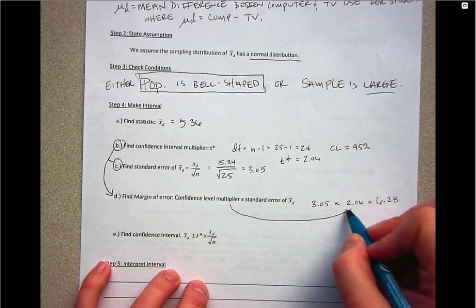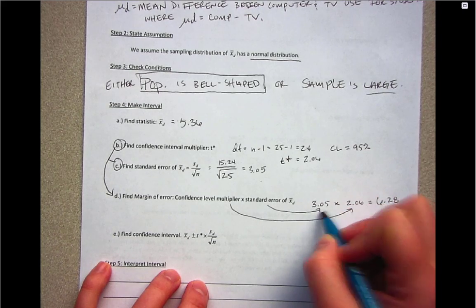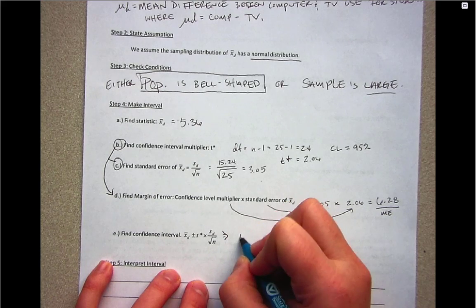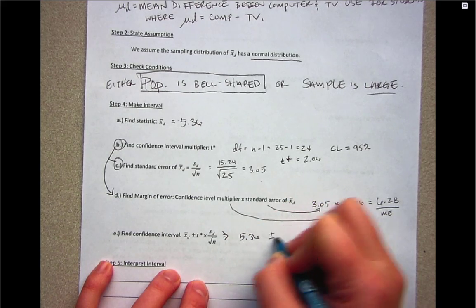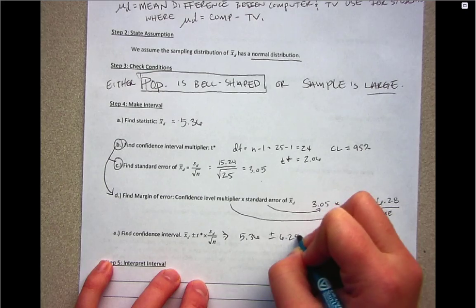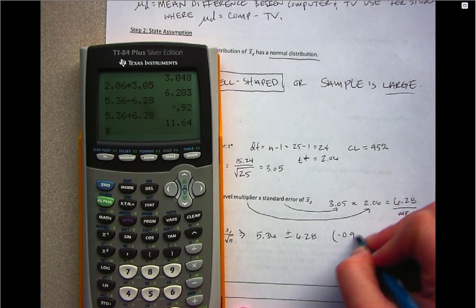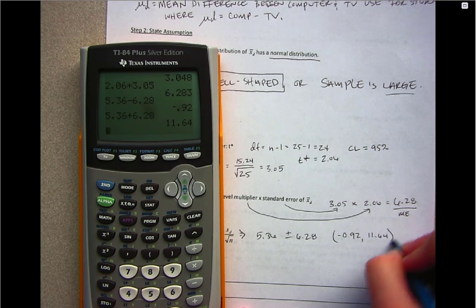So my margin of error is the multiplier times standard error. I'm going to use 5.36, which is x̄_d, plus or minus 6.28. The interval ranges from -0.92 to 11.64.